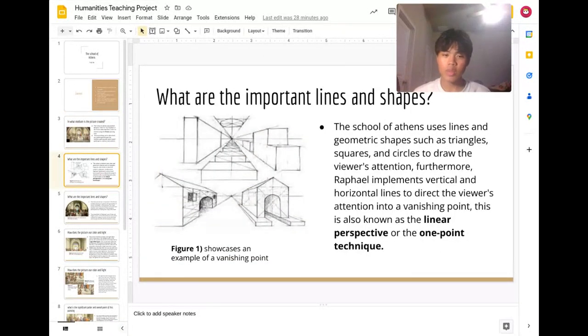What are the important lines and shapes? The School of Athens uses lines and geometric shapes such as triangles, squares, and circles to draw the viewer's attention. Furthermore, Raphael implements vertical and horizontal lines to direct the viewer's attention into a vanishing point.